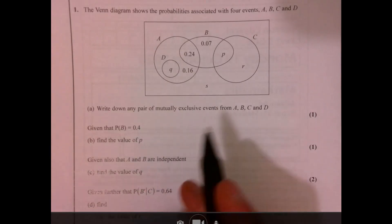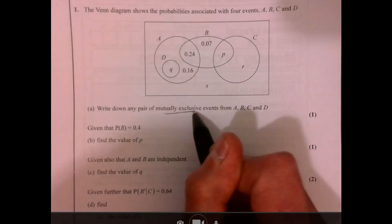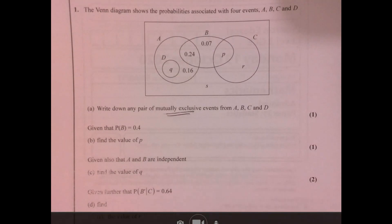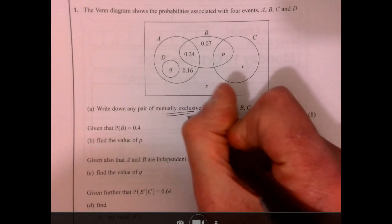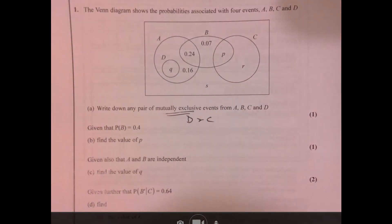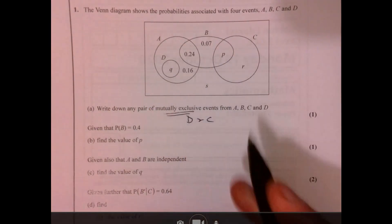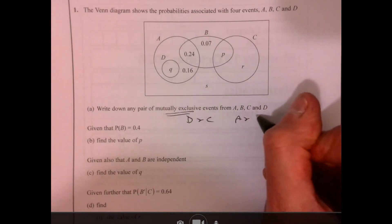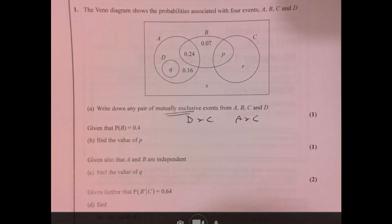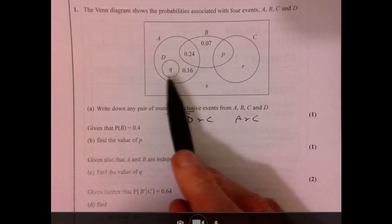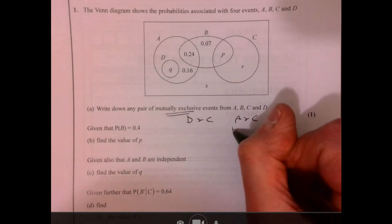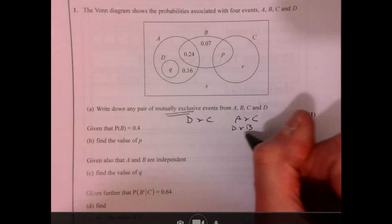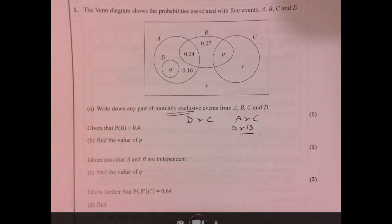Question one. Write down a pair of mutually exclusive events — that means they cannot happen at the same time. So we could have D and C, or we could have A and C. Any of these answers are OK. We could also have D and B, because they don't happen at the same time either. Any one of those three would be fine.